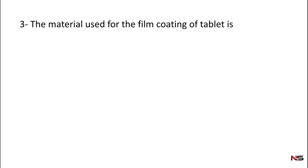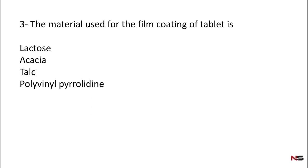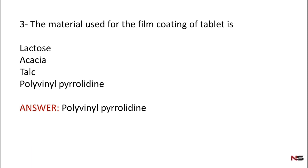The material used for the film coating of a tablet — options are: lactose, acacia, dark, polyvinyl pyrrolidone. Please write down your answer. The correct answer is polyvinyl pyrrolidone.